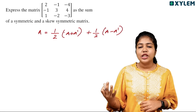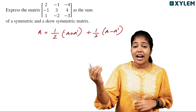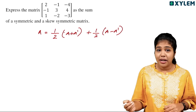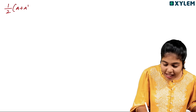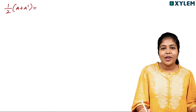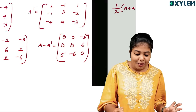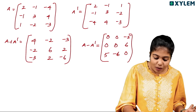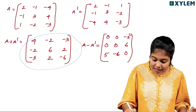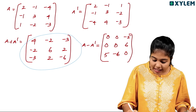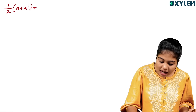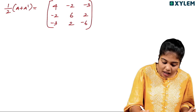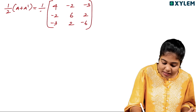Half into A plus A transpose, plus half into A minus A transpose. We have to compute half into A plus A transpose. Because we already have A transpose in our hands.